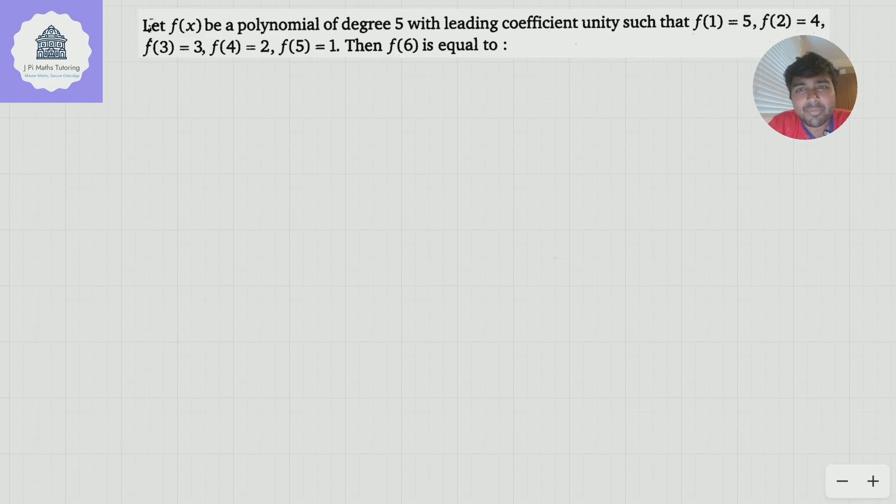Today we've got a really interesting problem about a polynomial. F of x is a polynomial of degree 5 with leading coefficient unity, such that f of 1 is 5, f of 2 is 4, f of 3 is 3, f of 4 is 2, f of 5 is 1. The question is, what does f of 6 equal to?